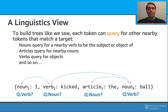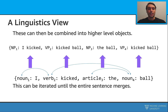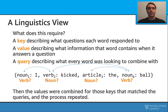By using these queries, we can start to combine things into some higher-level representations. For example, we can combine the first pair 'I kicked' — this is a noun phrase — 'kicked ball' — this is a verb phrase — 'the ball' — this is a noun phrase — and 'kicked ball' — this is a verb phrase. This can be iterated until the entire sentence merges. So with this linguistic view, we are able to create these structures. This requires keys, values, and queries. Overall, we can keep combining things into a higher level, and when we reach the sentence, this means we were able to create this structure.